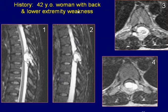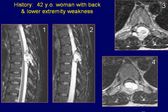A 42-year-old woman presenting with back and lower extremity weakness. Sagittal T2-weighted images of the dorsal spine reveal a high signal heterogeneous lesion at the posterior aspect of the spinal canal. The spinal cord at this level is compressed and displaced anteriorly by the lesion.